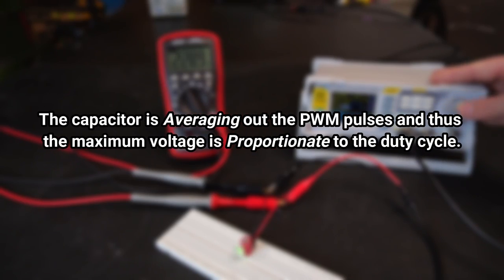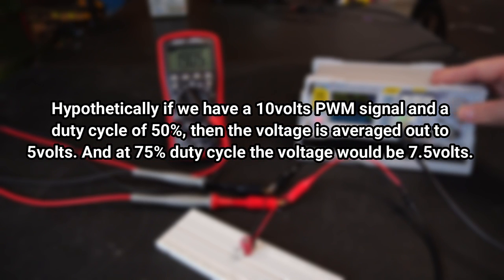In a nutshell the capacitor is averaging out the PWM pulses and thus the maximum voltage is proportionate to the duty cycle. Hypothetically if we have a 10 volt PWM signal and a duty cycle of 50% then the voltage is averaged out to 5 volts. And at 75% duty cycle the voltage would be 7.5 volts.